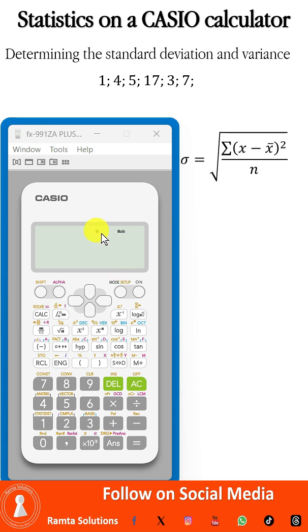Make sure your calculator is in stat mode. Therefore, we're going to go to mode and choose stat for statistics, then choose one variable, which is one.